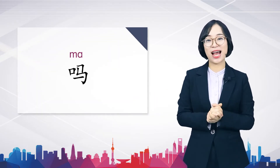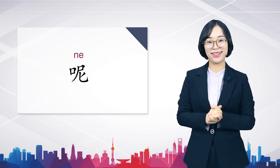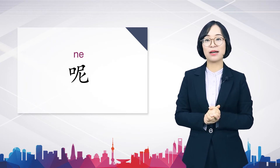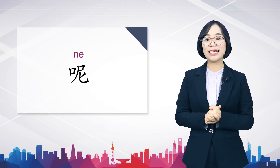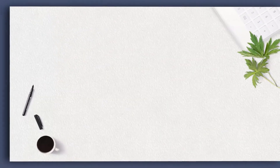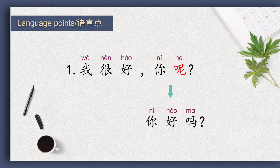We have learned how to ask a question with 吗. Right now we continue to learn how to make an abbreviated question with 呢. An abbreviated question with 呢 is made by adding 呢 directly after a pronoun or a noun. The meaning of the question must be clearly indicated in the previous sentence. For example, 我很好。 你呢? Here 你呢 means 你好吗? — the preceding sentence 我很好 provides the context.